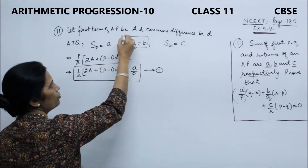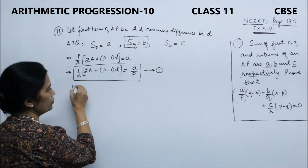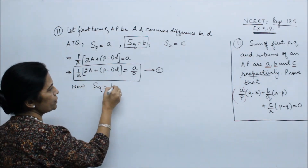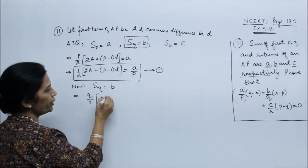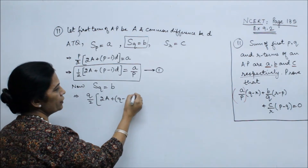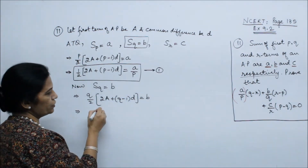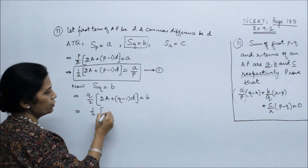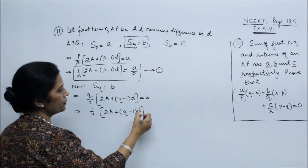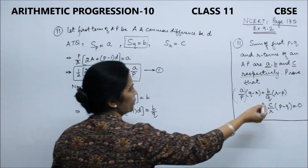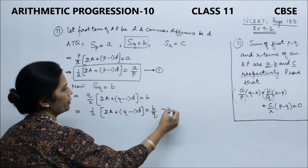Similarly, sum of Q terms is B, that means Q/2 × (2A + (Q−1)·D) = B. Shifting Q to the denominator in the same way: 2A + (Q−1)·D = 2B/Q. This is our second equation.